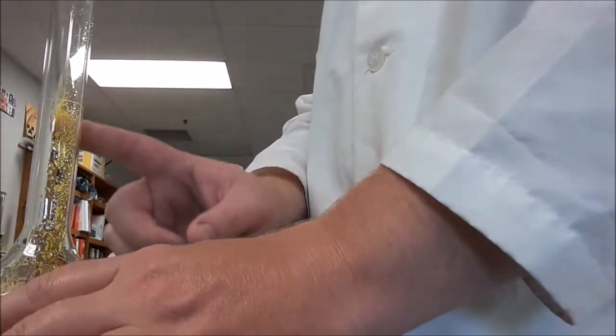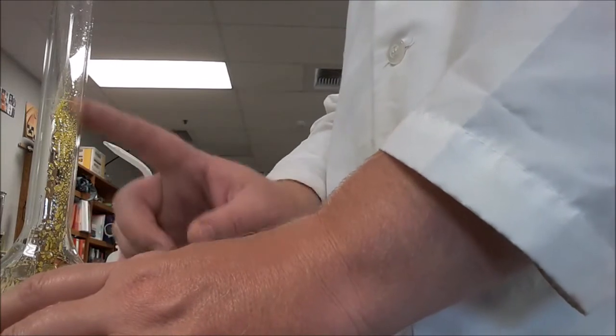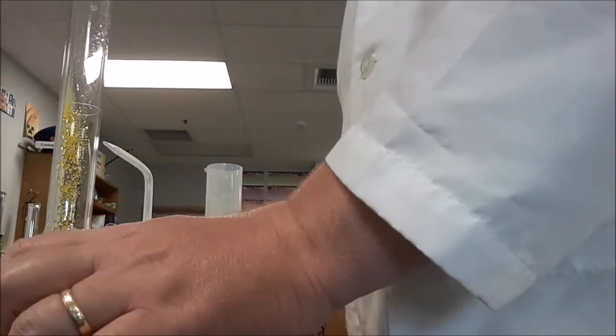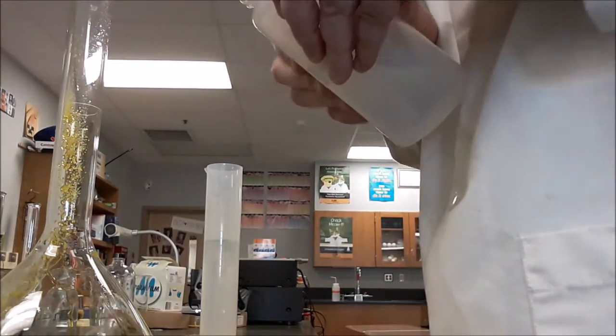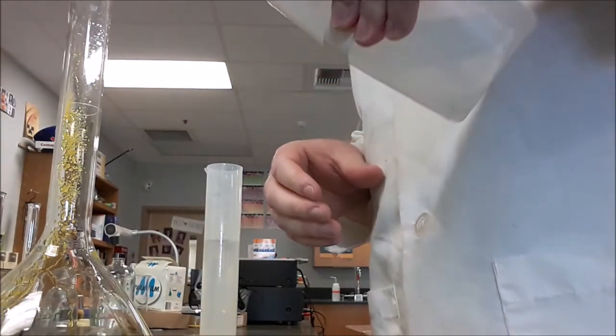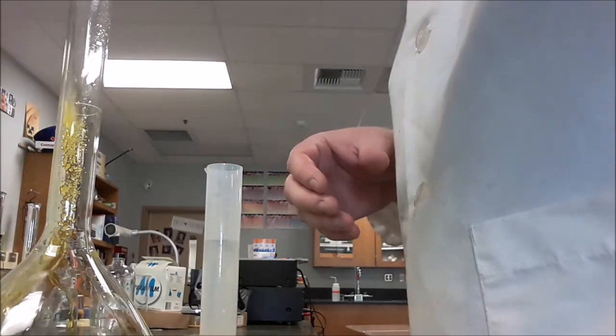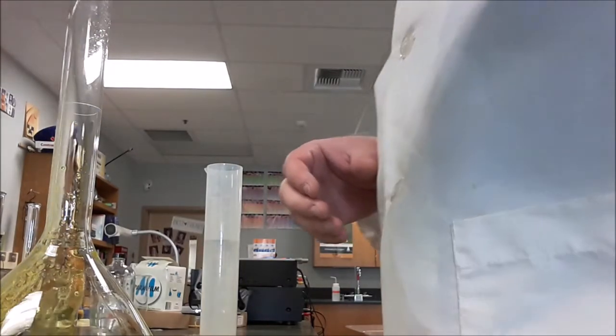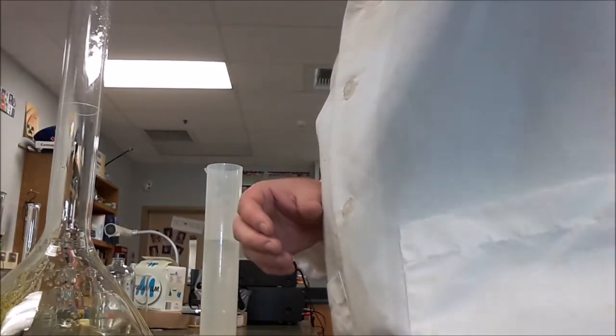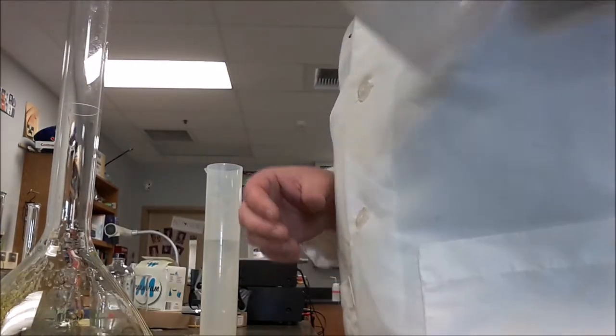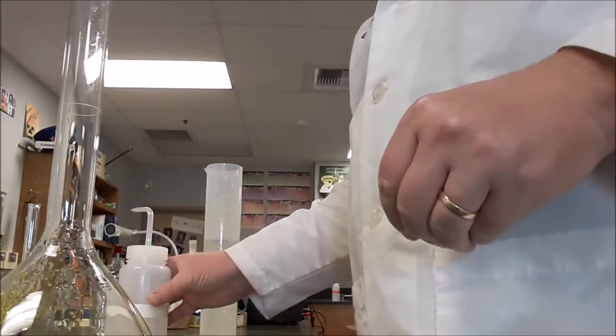The next thing I want to do is maybe wash down the sides of the volumetric flask. As you can see here, there's still some bits of solid stuck to the side. So if I get my DI wash bottle and I rinse this down, it's probably not terribly important that I do this step. But I want to anyway. Just rinse down the sides.